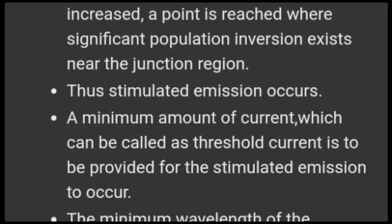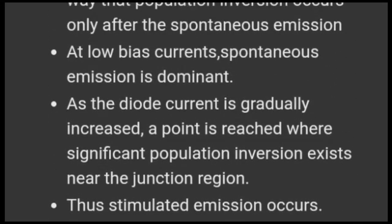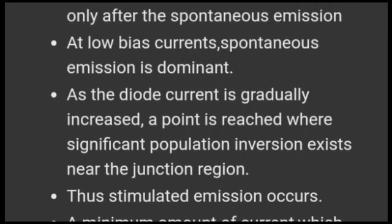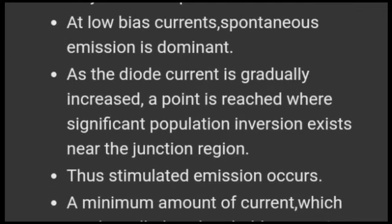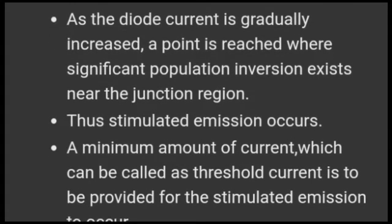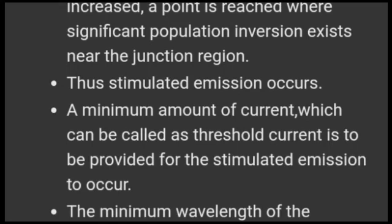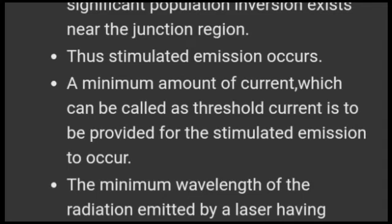To achieve stimulated emission, a minimum amount of current called the threshold current must be provided. At low bias current there is spontaneous emission but no population inversion. Stimulated emission only occurs when the current exceeds the threshold value.